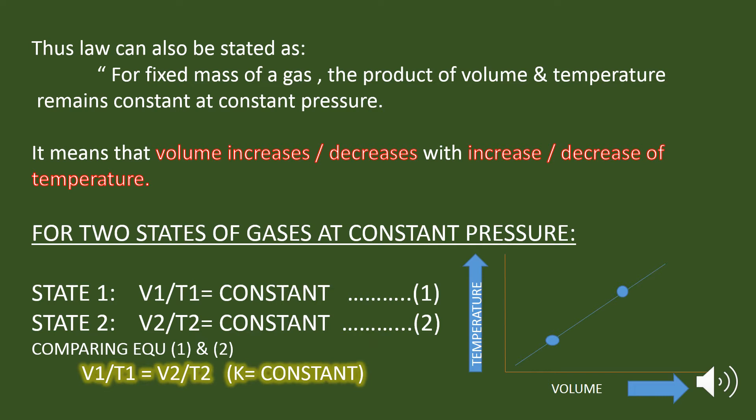Charles' law can also be stated as: for a fixed mass of a gas, the ratio of the volume and the absolute temperature remains constant at a constant pressure. It means that the volume changes with the change in absolute temperature, but the ratio V by T remains the same.